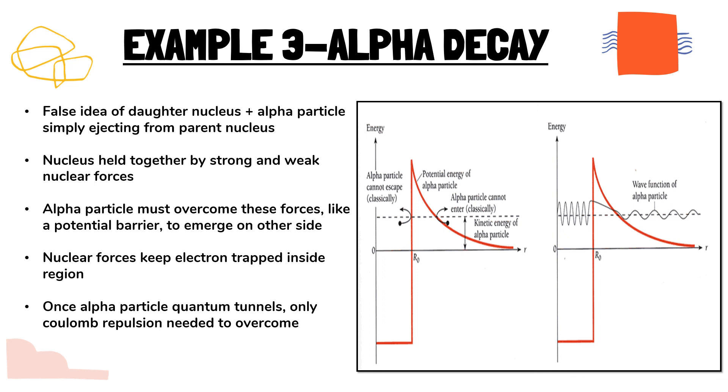And once the alpha particle quantum tunnels, then only the coulomb repulsion is needed to actually escape from the atom and be split into the daughter nucleus and the alpha particle that we see happening in the process of alpha decay.